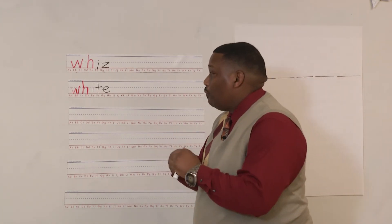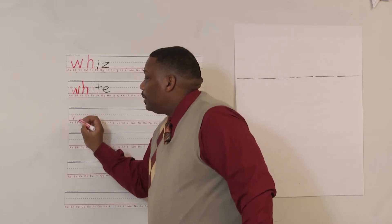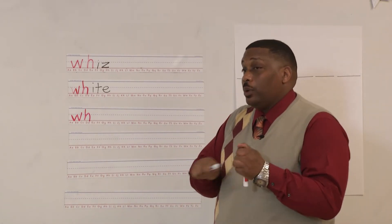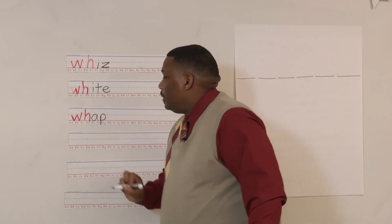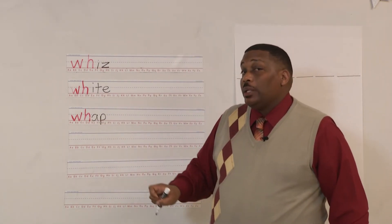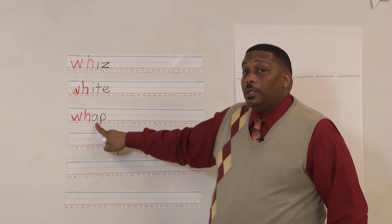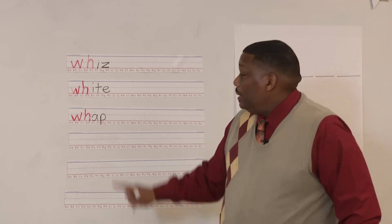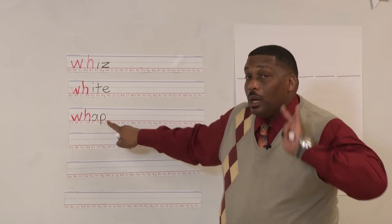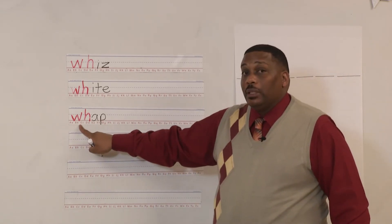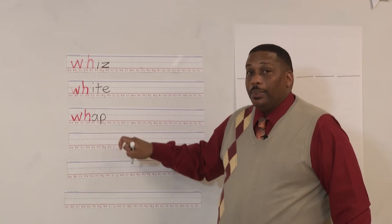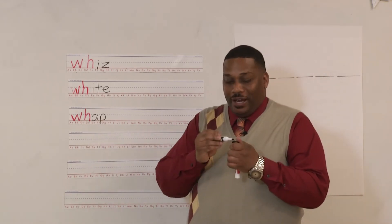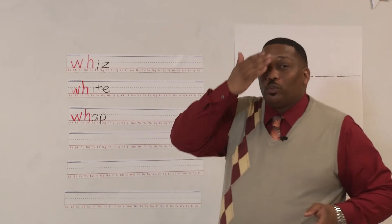Let's blend one more since you're doing such a great job. Special sound WH in red, rest of the word in black. Short vowel A says 'ah,' and I have the consonant P — P says 'puh.' Let's blend: wh-a-p — whap! You guys are so smart — kiss your brain!